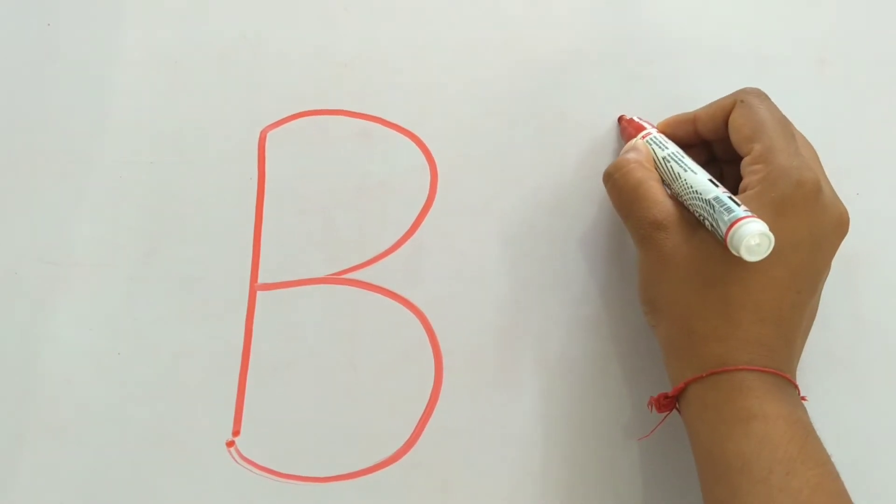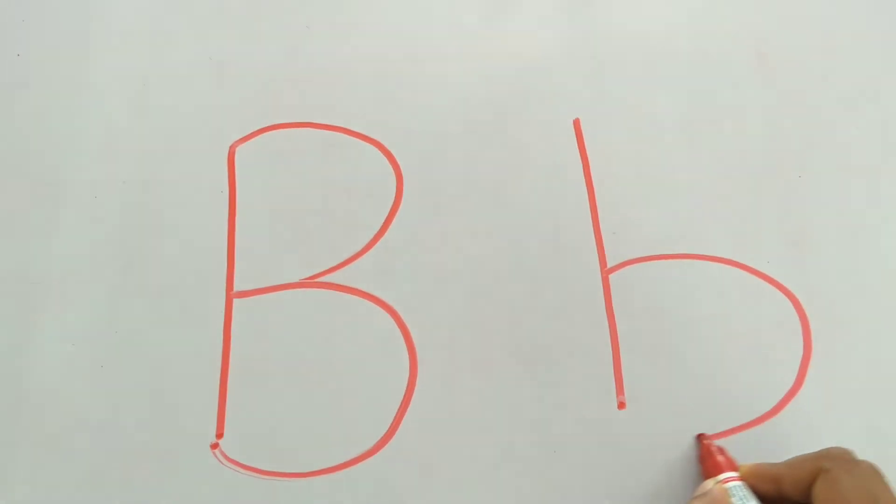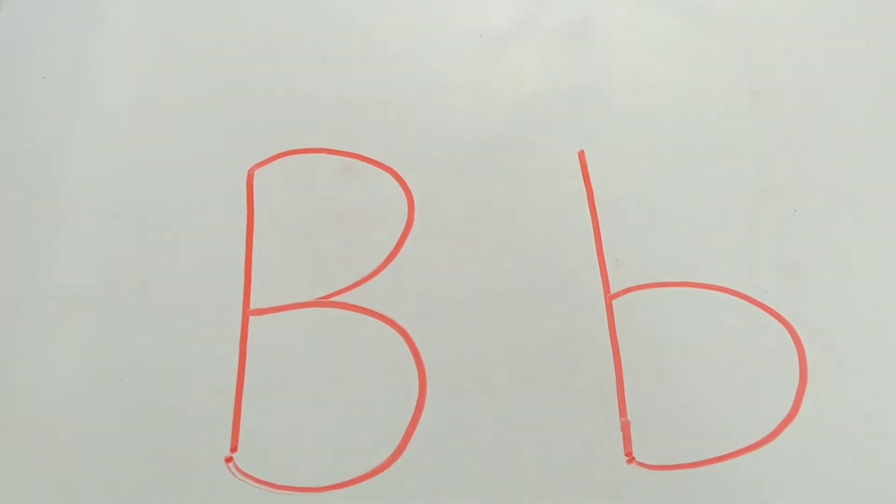Now write small b. One standing line and one backward curve. This is the letter B.